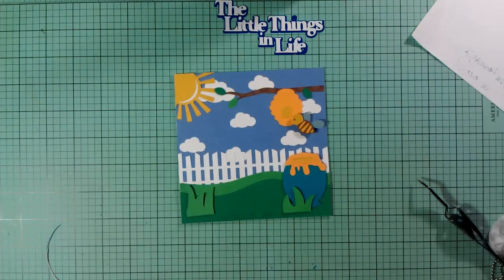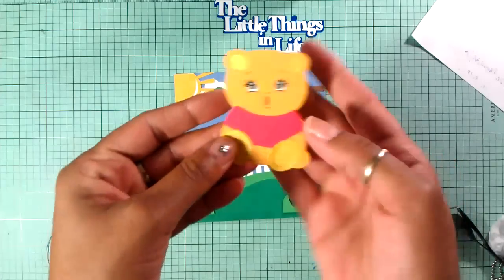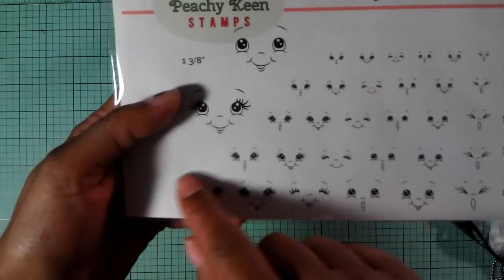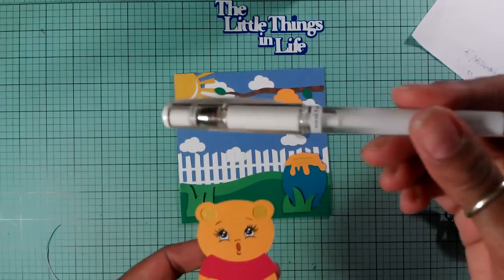Now I have this bumblebee and this bee is on a foam dot. The main attraction is my bear. Here goes my little honey bear sitting down. I did her face with the new Peachy Keen stamps called In the Garden Face Assortment. I used this one inch one. Then I ended up using my perfect gel pen that I used to color her eyes in. Don't she look adorable? I'm just gonna adhere her down right there.